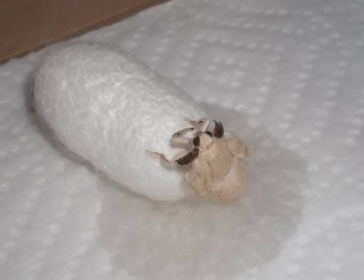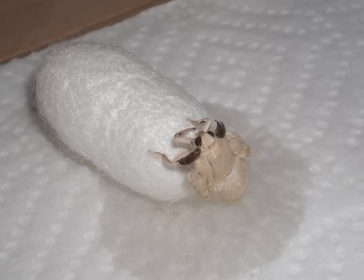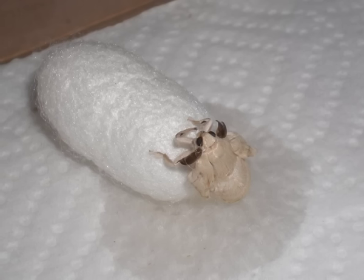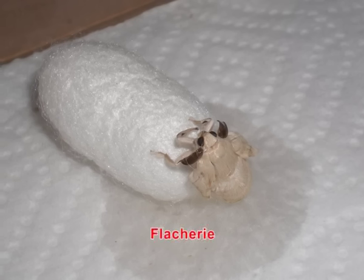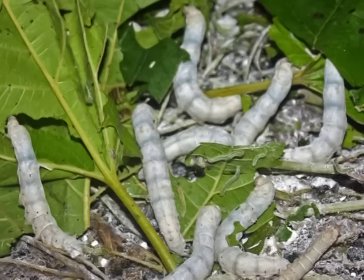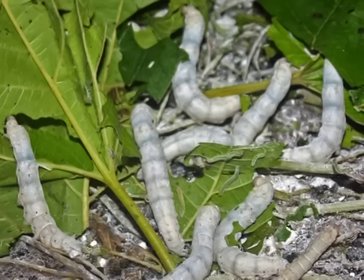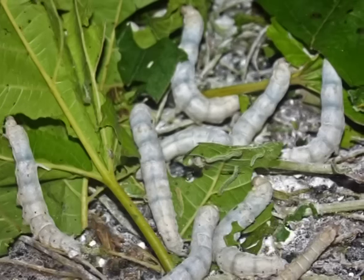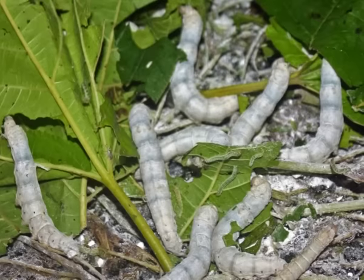Bacterial diseases — Flachery: Formerly, all diseases with the symptoms of diarrhea and vomiting were collectively called flachery and were believed to be caused by bacterial infection. Later, it was found that bacterial infection was not always associated with flachery. In view of these findings, bacterial diseases formerly called flachery are now categorized into four different diseases.